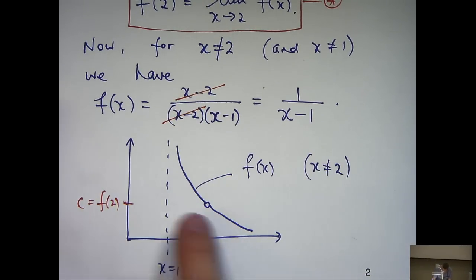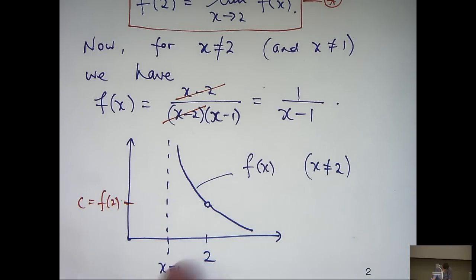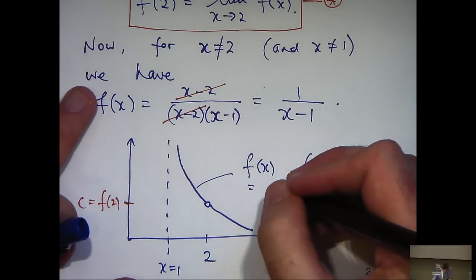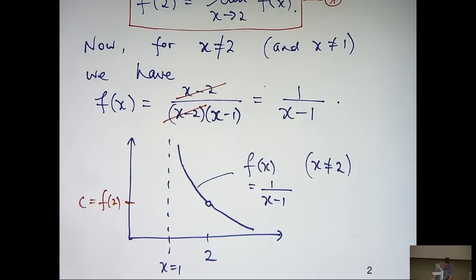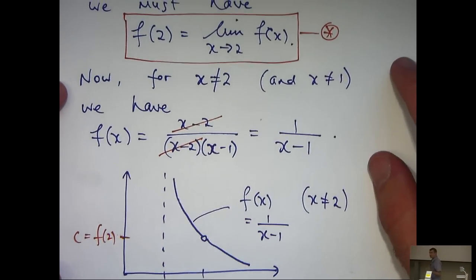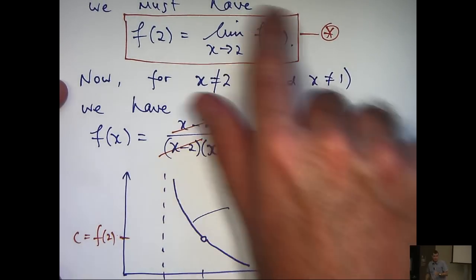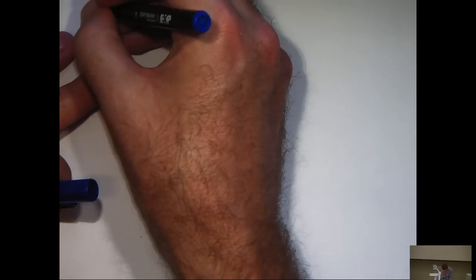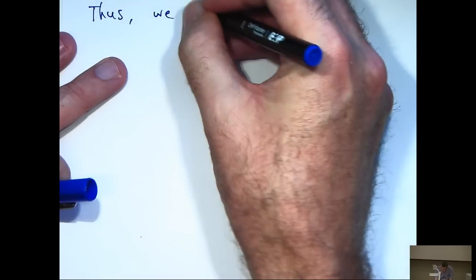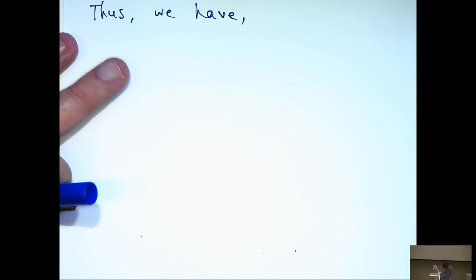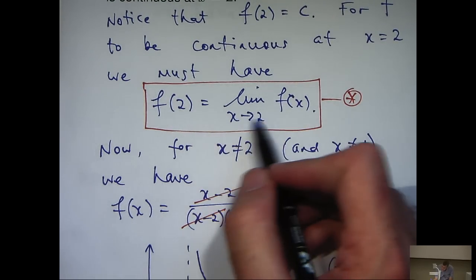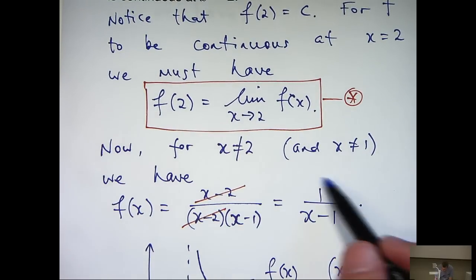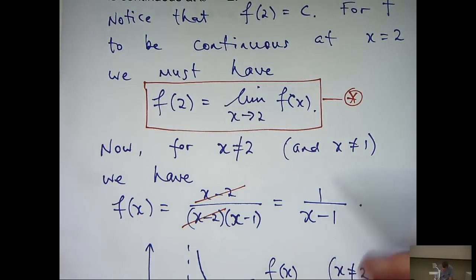So how do we do it? Well, you may be able to just look here and see what the value should be. Because remember, this is just 1 on x minus 1. But let's actually use this limit condition. Okay. So from our simplified consideration, we know that, well, when we take the limit of a function as x approaches 2, x is not equal to 2. So I can actually use this representation to take our limit.